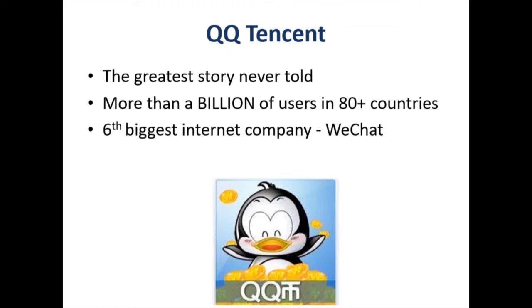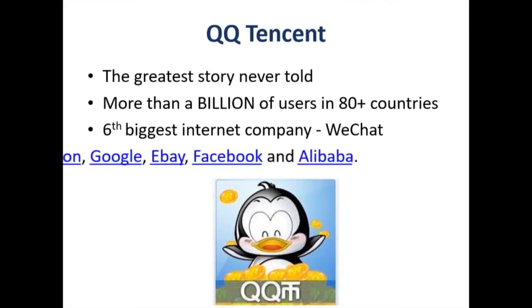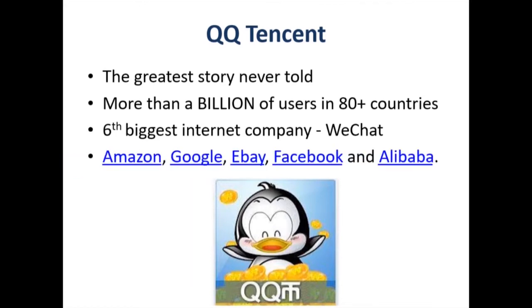QQ Tencent still exists but is not popular anymore. Tencent is the sixth biggest internet company in the world. The first five? Amazon, Alphabet/Google, Facebook, Alibaba — and the fifth is... eBay. Alibaba and Tencent are both Chinese.